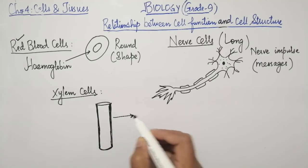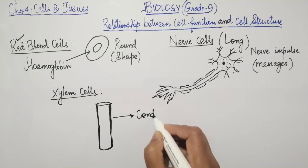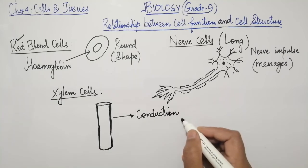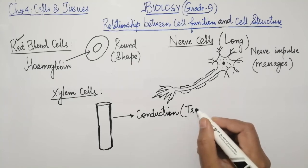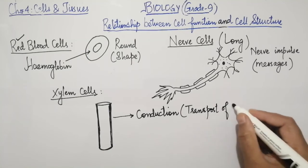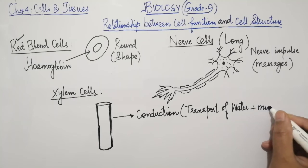In the plant they perform two functions. Number one, first of all, they work in conduction. What is the meaning of conduction? Transport of water or salts. Conduction means transport in the plant.